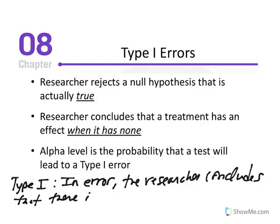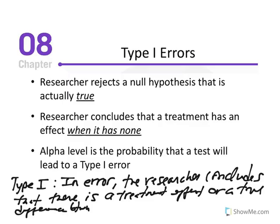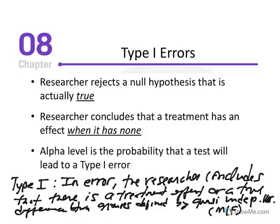the researcher concludes that there is a treatment effect or a true difference between groups defined by a quasi-independent variable, such as males versus females. We don't ever want to lose sight that we may be conducting non-experimental research, which is the comparison of groups that are defined by a quasi-independent variable.